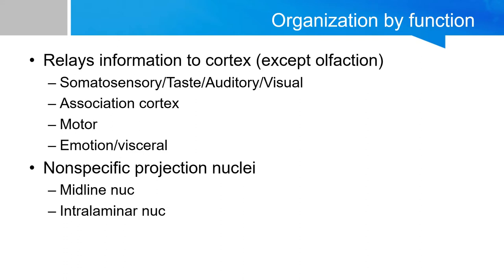The thalamus will also sample information and relay it into the association cortex, which are basically secondary or tertiary sensory cortex involved in processing of primary sensory information such as vision and touch. The thalamus will also modify outgoing signals such as motor signals, and it will be involved in regulating and relaying information in the limbic pathway — therefore involved in the emotional aspect as well. There are other non-specific projection nuclei and we will talk about each of these in more detail.